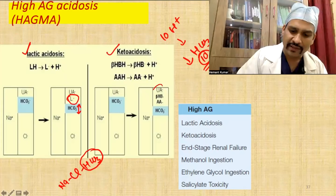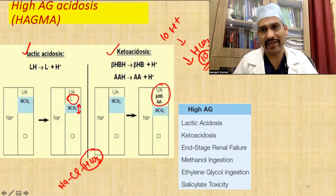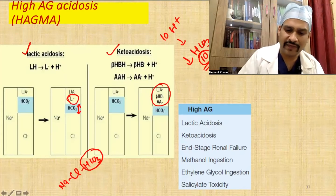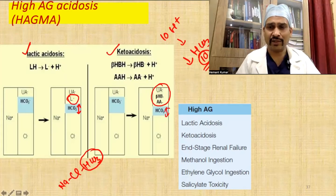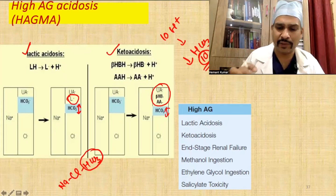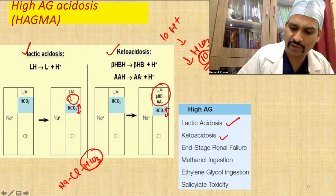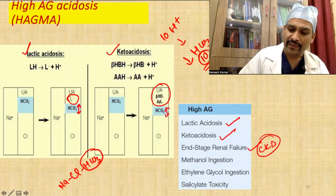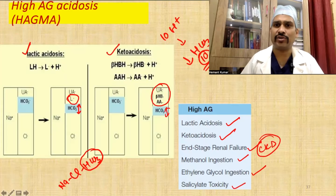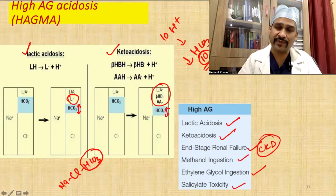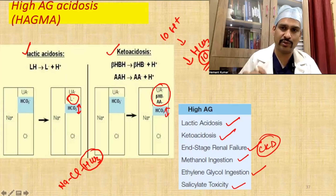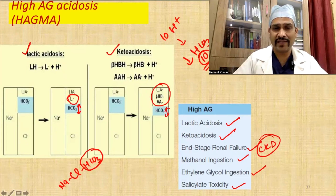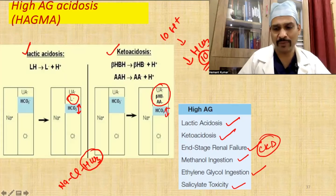The causes of high anion gap metabolic acidosis include lactic acidosis, ketoacidosis, renal failure like CKD, methanol poisoning, ethylene glycol ingestion, and salicylate toxicity. These substances cause HAGMA. The amount of acid entering the body equals the same amount by which bicarb is reduced — remember this concept.